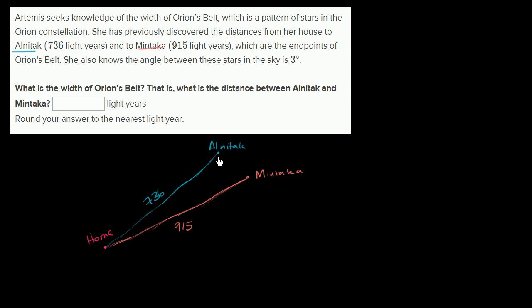What we want to do is figure out the width of Orion's Belt, which is the distance between Alnitak and Mintaka. We need to figure out this distance right over here. The one thing that they did give us is this angle. They said that the angle between these stars in the sky is 3 degrees. This is 3 degrees right over there.